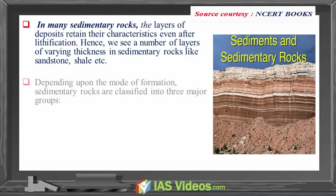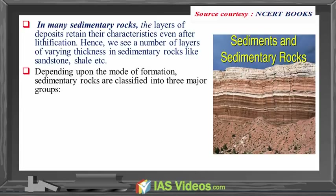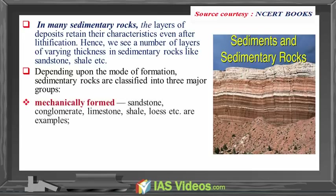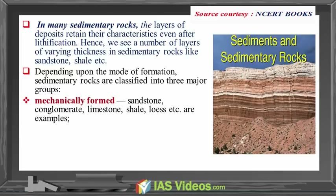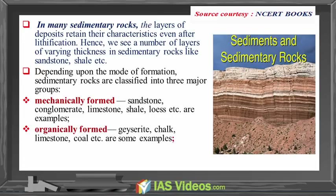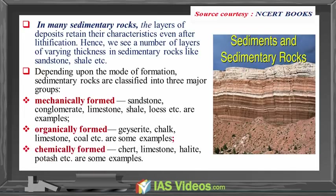Mechanically formed: sandstone, conglomerate, limestone, shale, loess, etc. are examples. Organically formed: geyserite, chalk, limestone, coal, etc. are some examples. Chemically formed: chert, limestone, halite, potash, etc. are some of the examples.